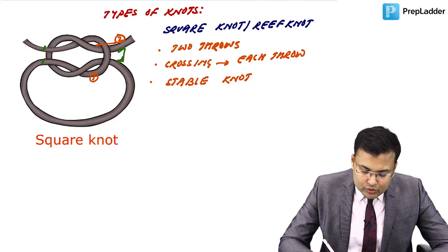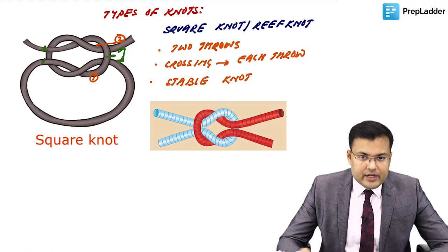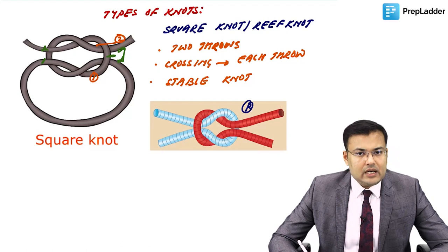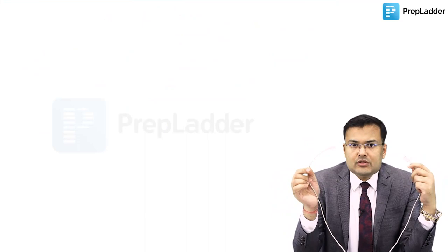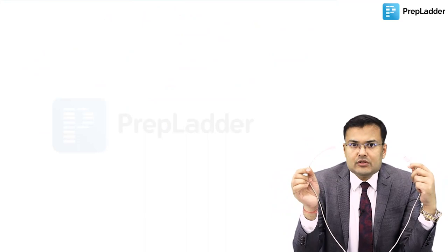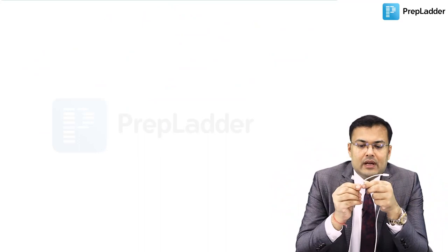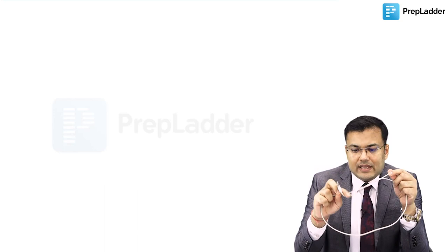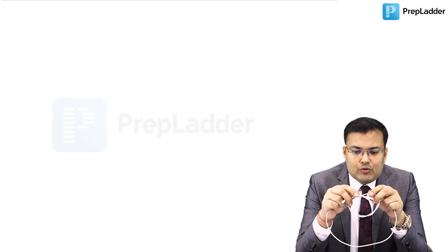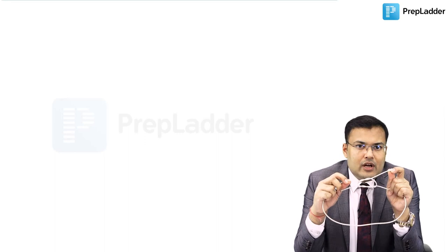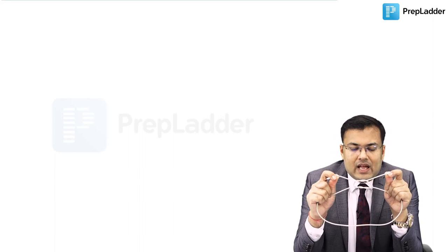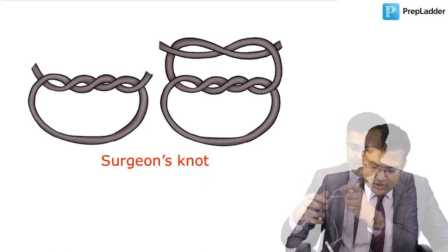Surgeon's knot: two wraps in the first throw, one wrap in the second throw, with crossing done in each throw. The granny knot (pseudo square knot): two throws are taken but crossing is NOT done in any throw. As a result, one end is above and one end is below — they are not together — making the knot relatively unstable and more prone to slip.